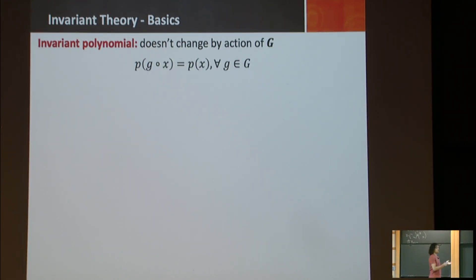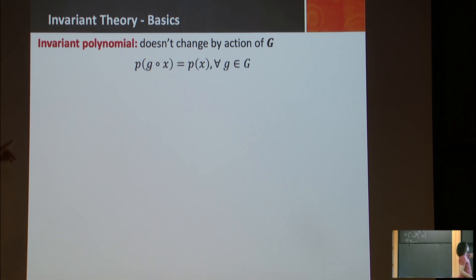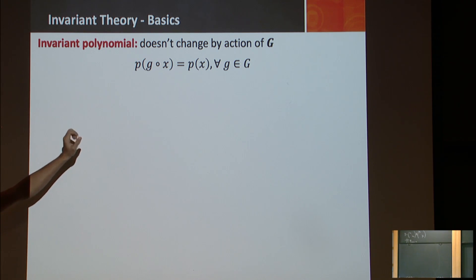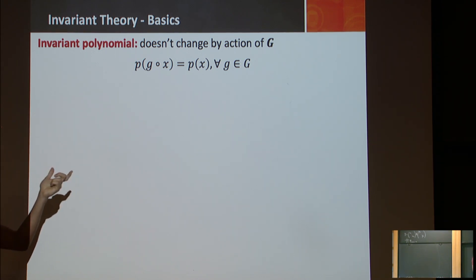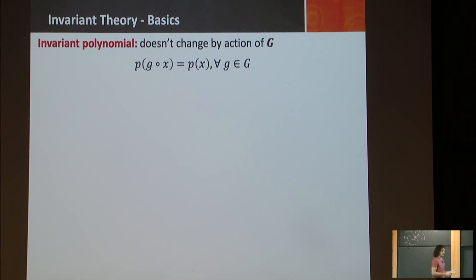Now, we have the group acting in a vector space, and we want to study some nice algebraic properties. Since we're talking about algebra, we have these invariant polynomials — polynomials that don't change by the action of your group G. So if I have some polynomial on the variables X, and once I apply the action G on X, the value of this polynomial does not change for all values of the group.